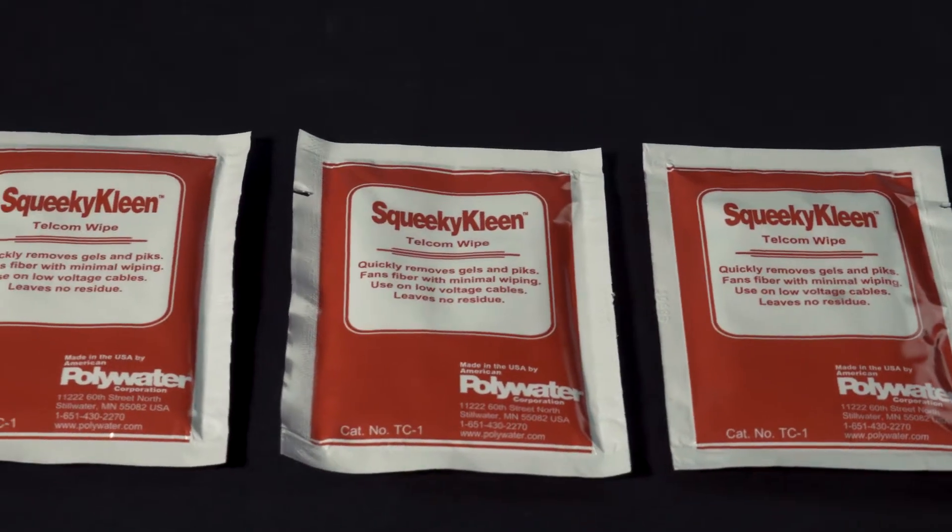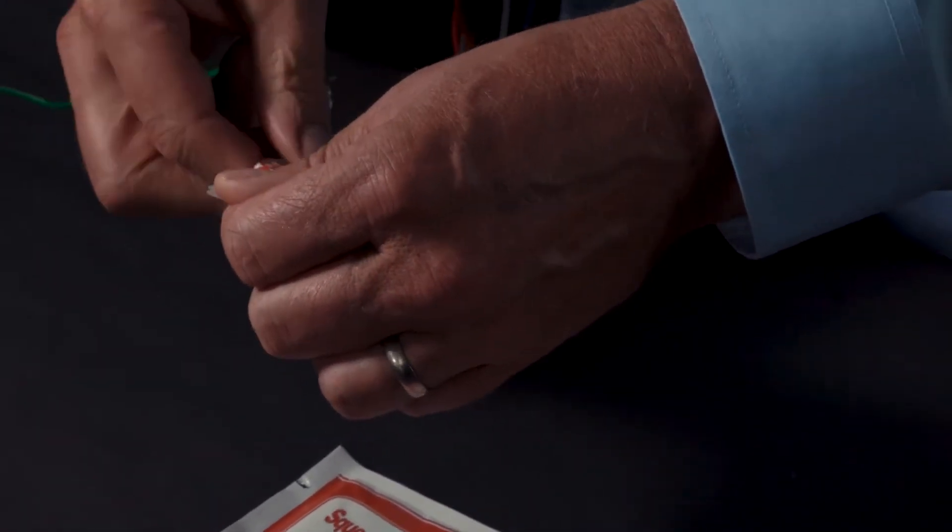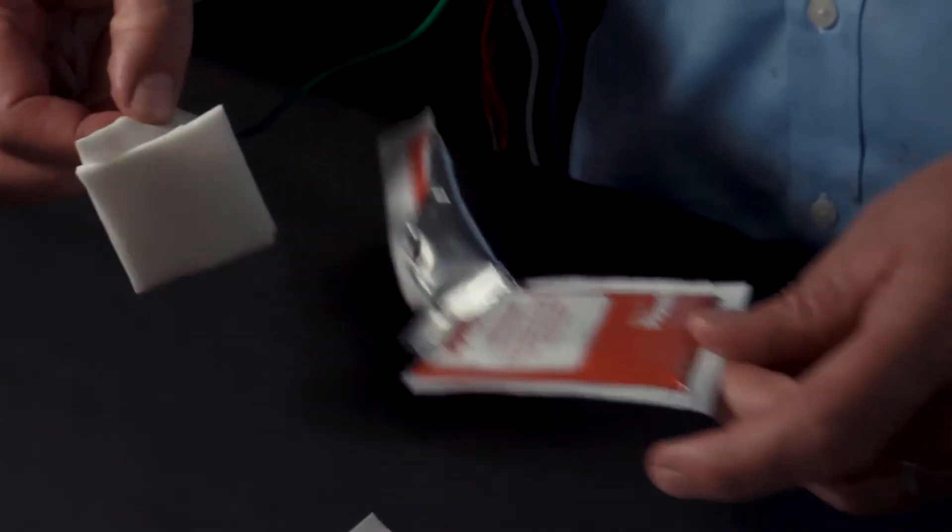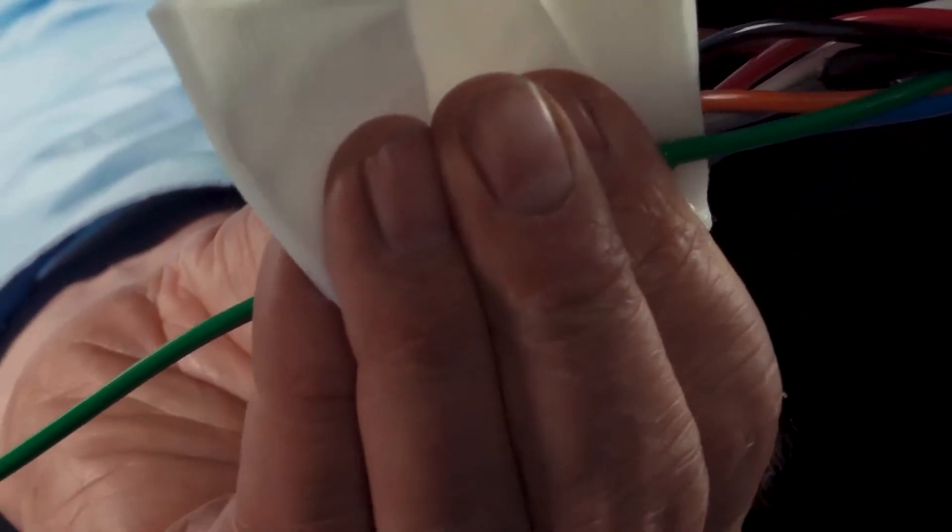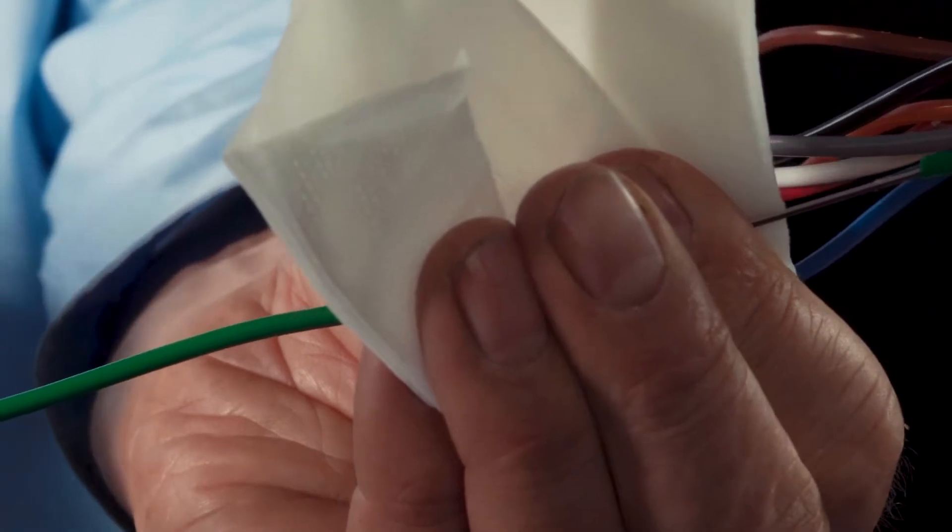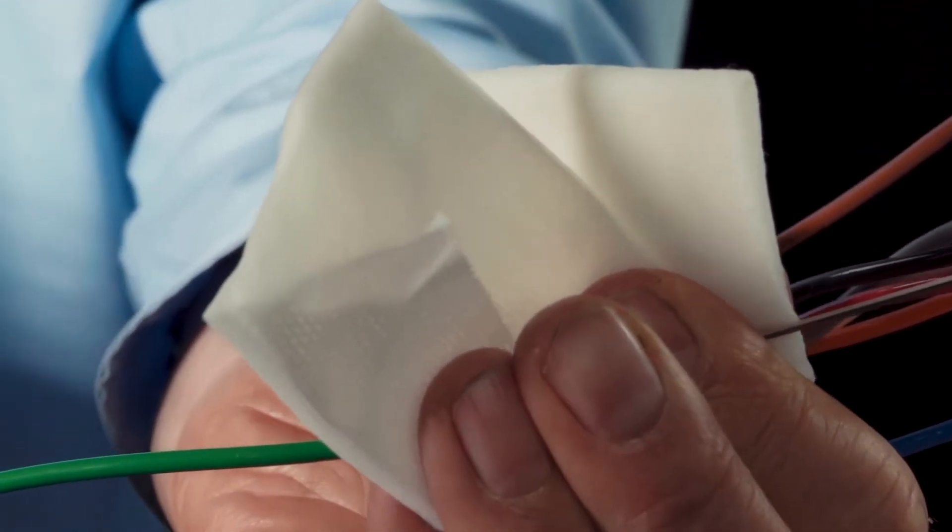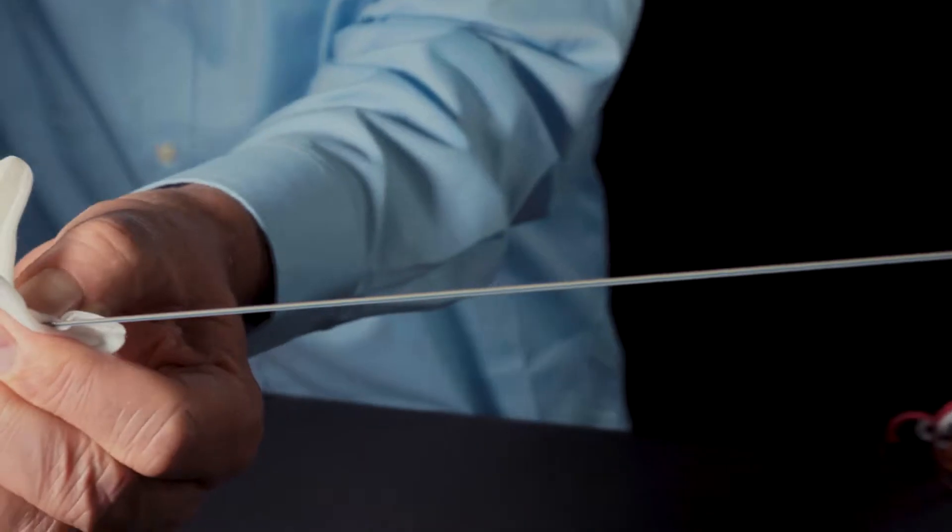SqueakyClean comes in a convenient pre-saturated white package with a durable non-linting towel. Combine the effect of cleaning with a high performance towel and the fiber prep is a snap. The strands are cleaned and will fan in just a few wipes.